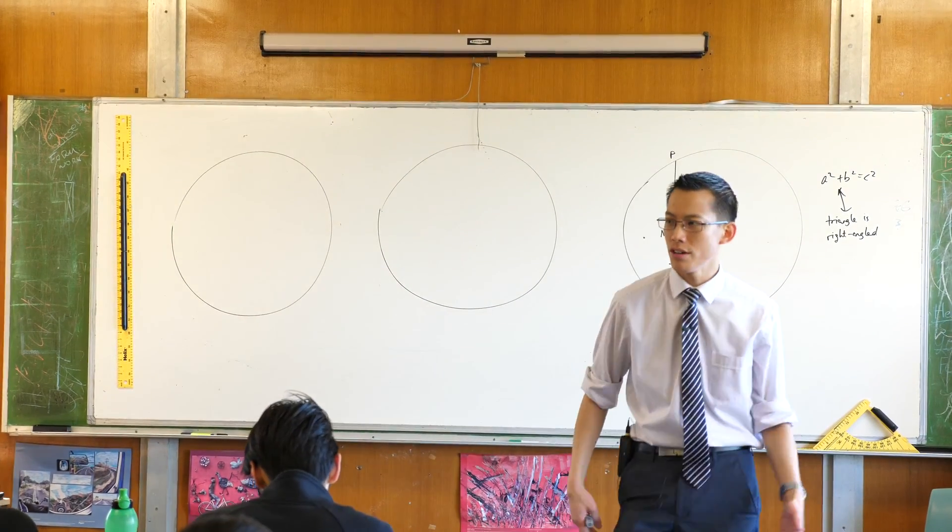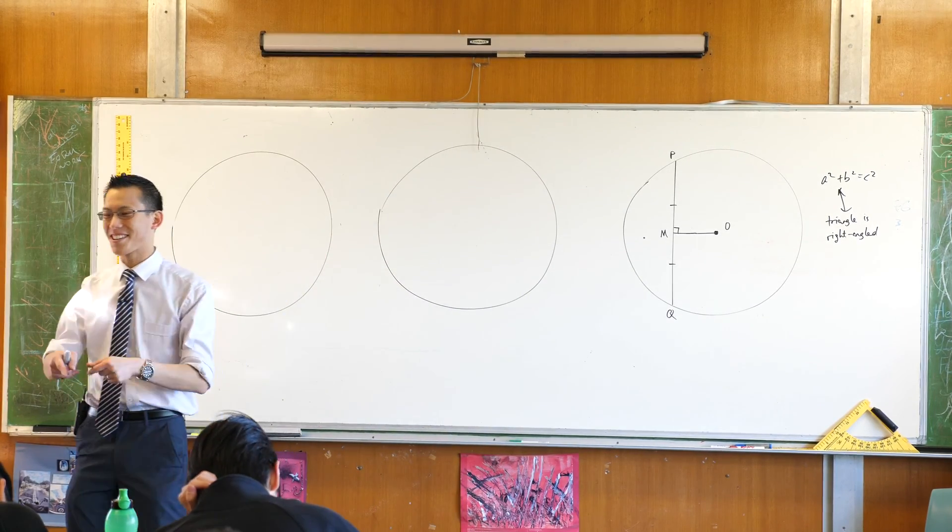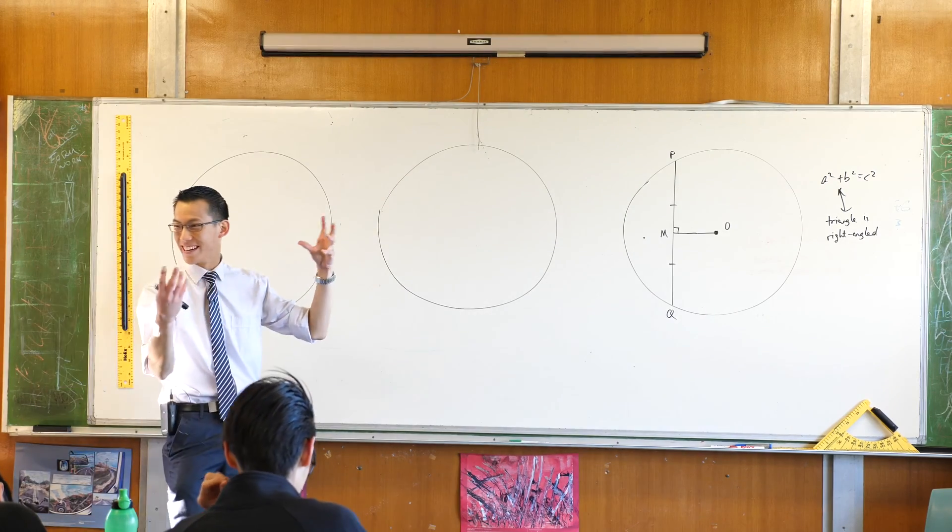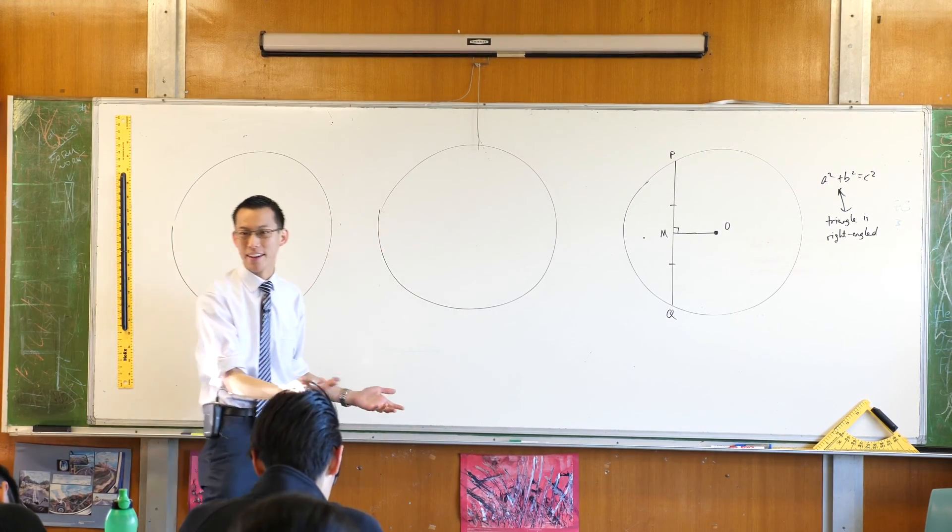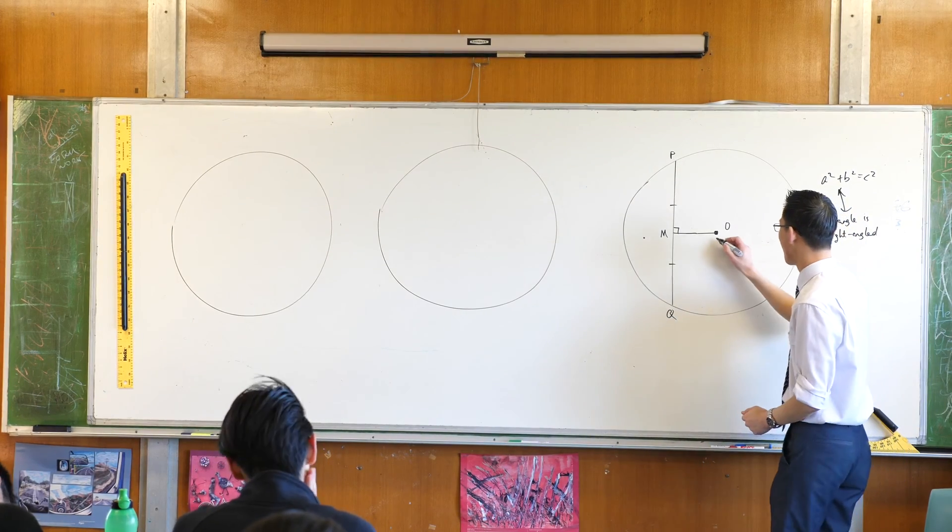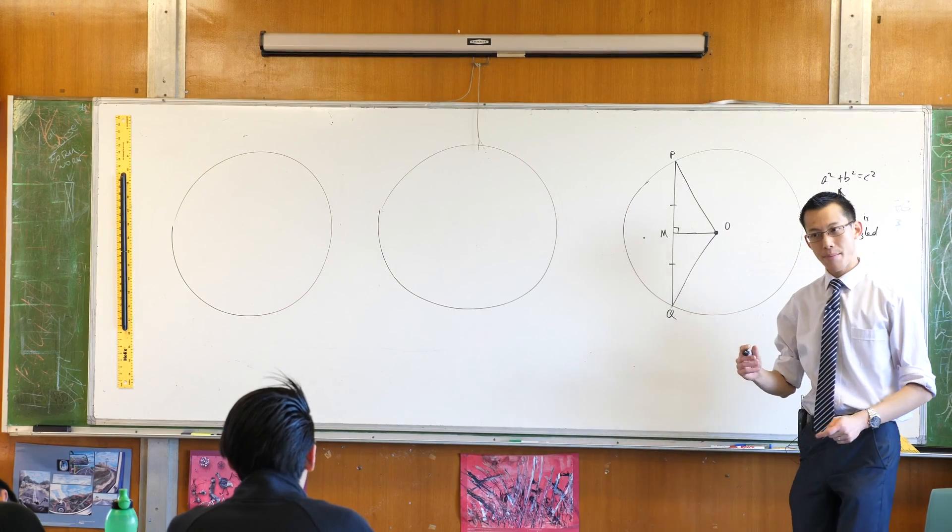Would you like me to show you? I saw most people have the right constructions. If all else fails in a circle geometry question, draw some radii, because radii are always equal, so you'll find something. So I'm going to join up OP and OQ. Let's do that.